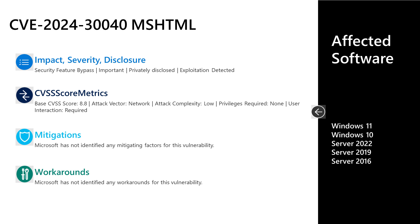Next, an important security feature bypass vulnerability in the Windows MSHTML platform — CVE-2024-30040. This was privately disclosed to Microsoft, but exploitation has been detected. This has a base score of 8.8. The attack vector is over the network, the attack complexity is low, no privileges are required, but user interaction is required. There are no documented mitigations or workarounds. The affected software is Windows 10 and 11, as well as Server 2016, 2019, and Server 2022.